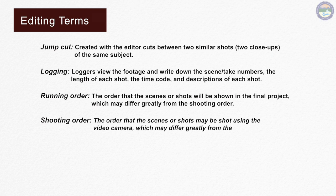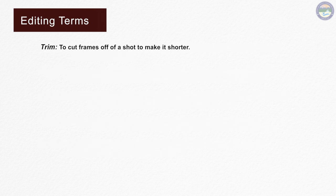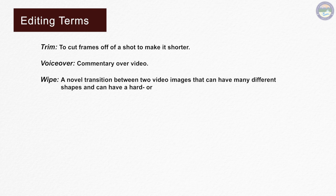Shooting order is the order that the scenes are shot using the video camera, which may differ greatly from the running order. Timeline usually includes multiple tracks of video, audio and graphics in a non-linear editing system. Trim means to cut frames of a shot to make it shorter. Voice over is commentary over video. Wipe is a novel transition between two video images that can have many different shapes and can have a hard or soft edge transition.